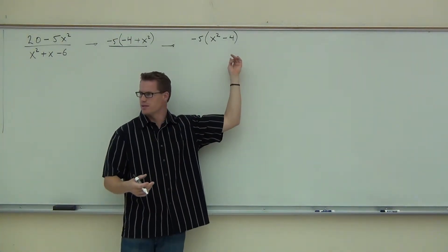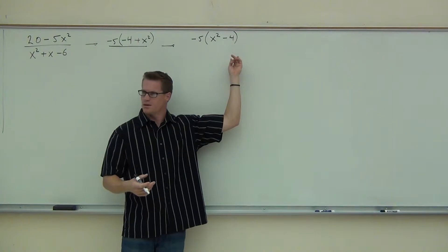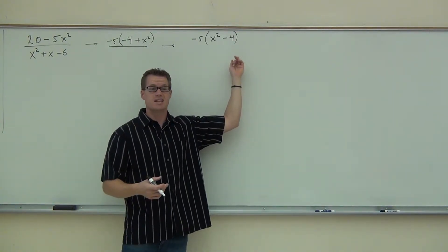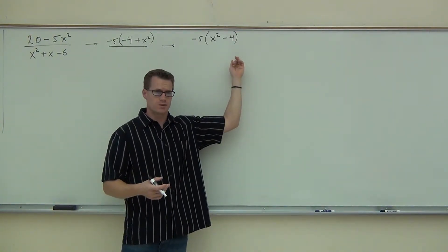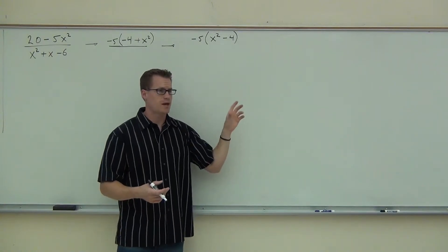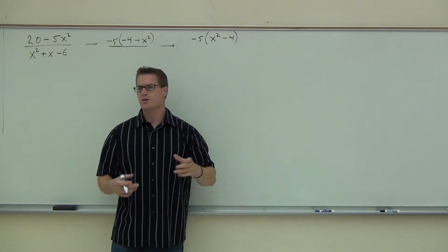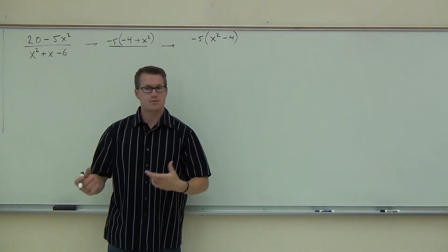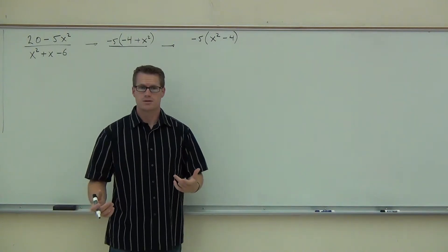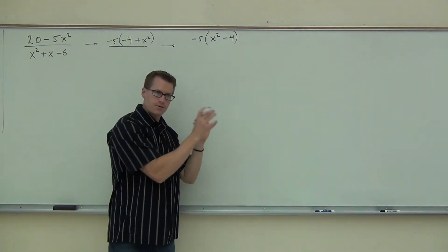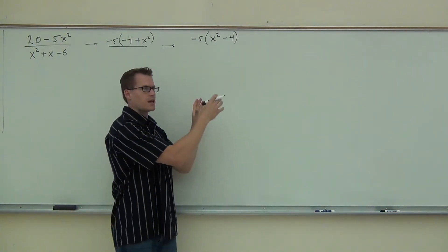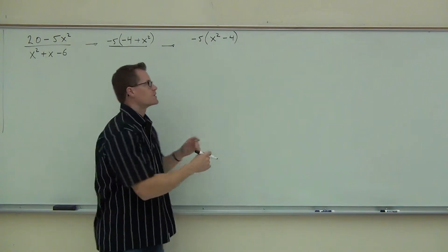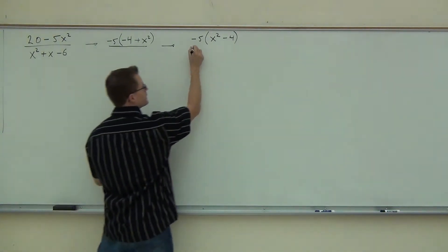Can you see it's a difference of squares now a little bit easier? We're going to have to factor out a negative anyway, so you may as well do it at the beginning rather than at the end. It's easier to work with and you don't make any mistakes on it. So we have the numerator done.